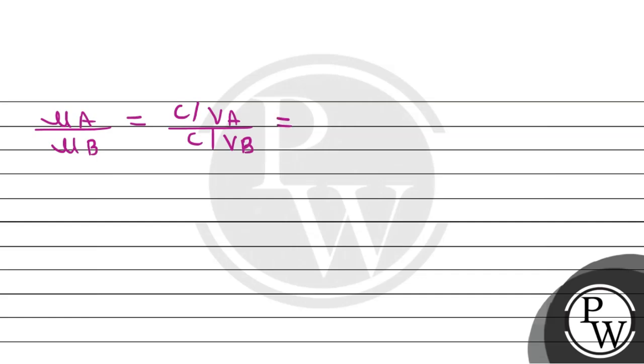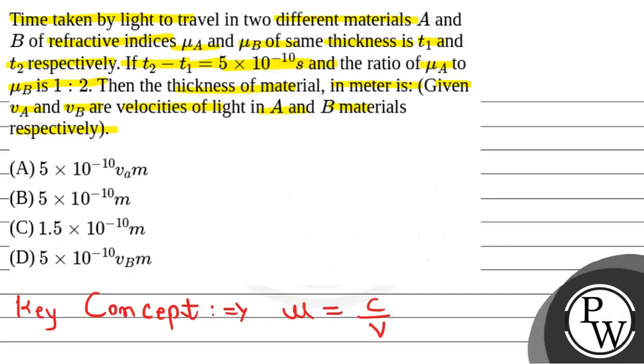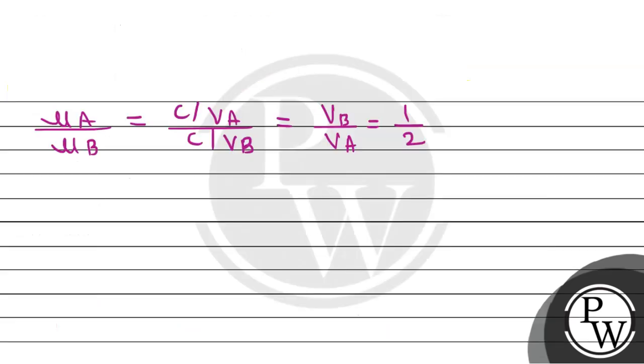VB over VA. This is given as equal to 1 by 2. Mu A by mu B ratio is given as 1 to 2.